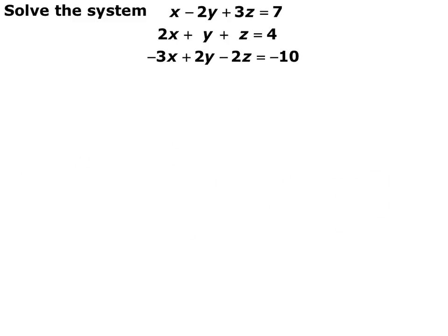Now we're going to talk about systems of three equations. We are in the three-dimensional plane and have three variables. We have x minus 2y plus 3z equals 7, 2x plus y plus z equals 4, and negative 3x plus 2y minus 2z equals negative 10. On these, you're going to pick one variable to eliminate from two separate pairs of equations. I chose y because I already saw opposite signs — a negative 2y and a positive 2y. Any variable would be fine as long as you pick the same variable for both pairs.